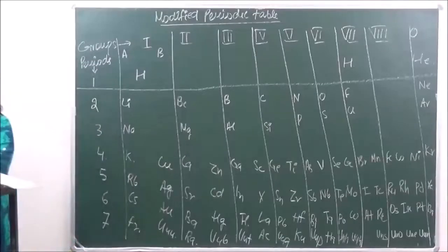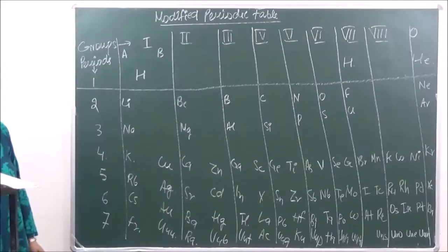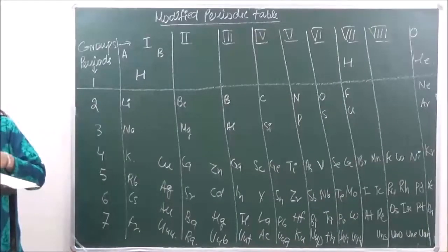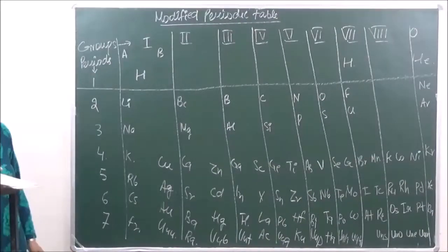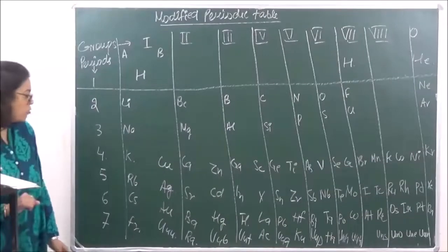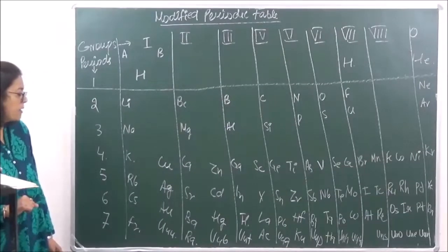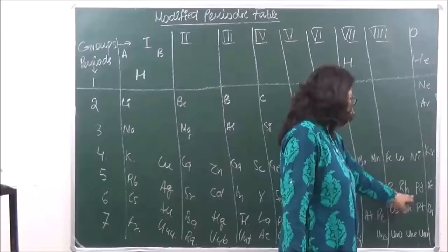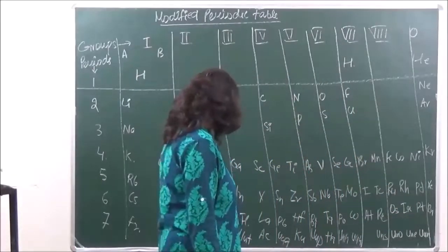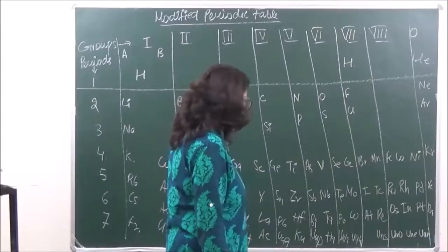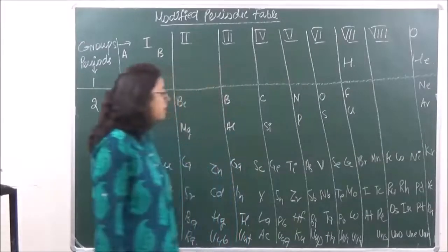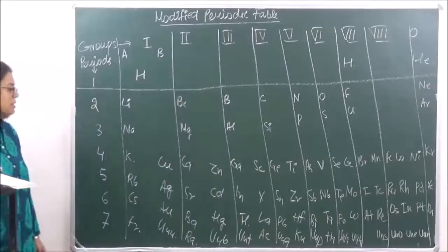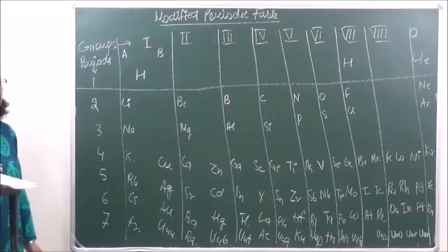Another anomalous pair was thorium and palladium. Thorium had an atomic mass of 232 whereas palladium had an atomic mass of 231, and thorium was placed before palladium. If you look at the periodic table, you can locate palladium but thorium is not properly placed before it in this table. These were some of the anomalous pairs discussed in the context of the modified periodic table.